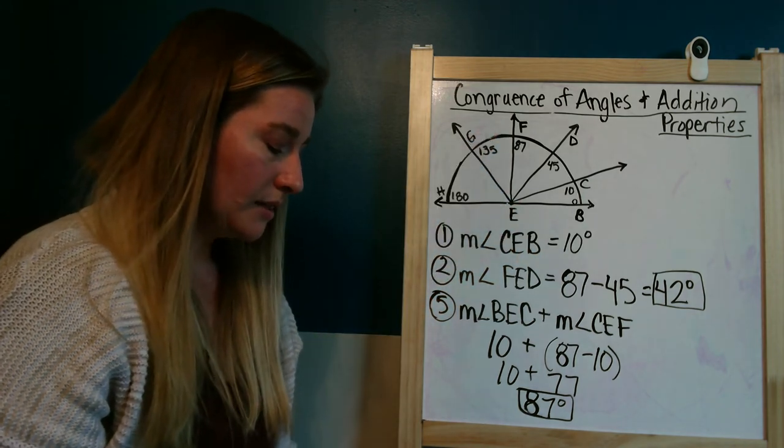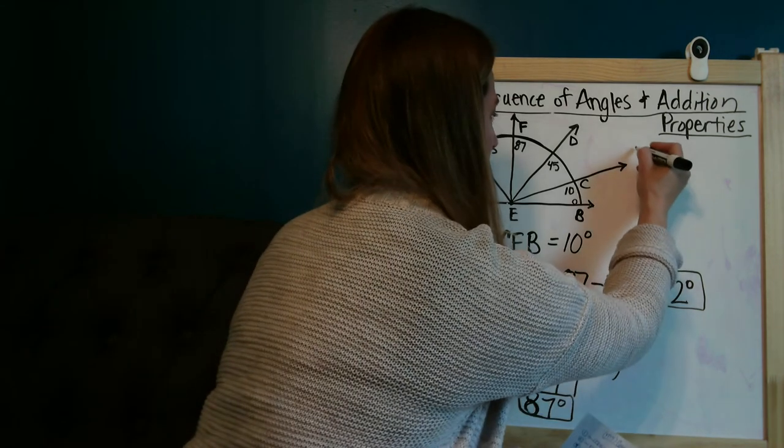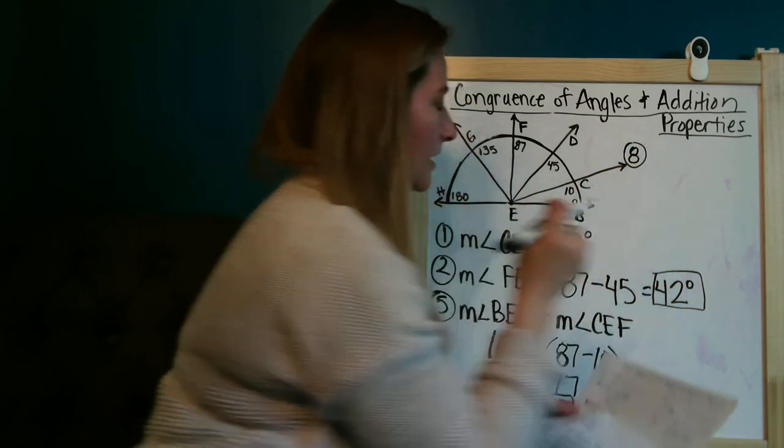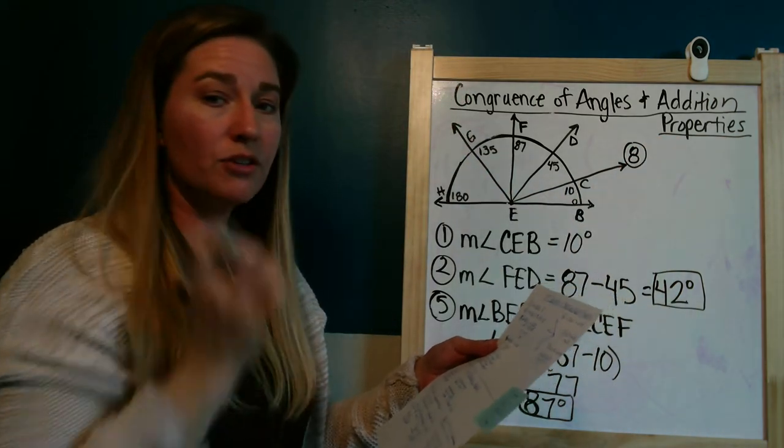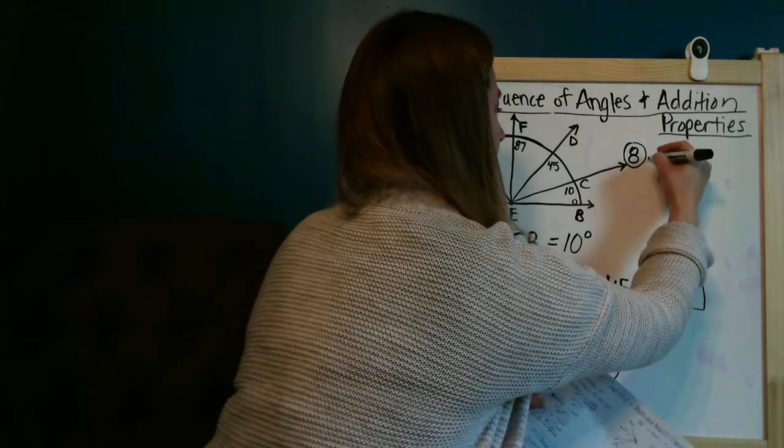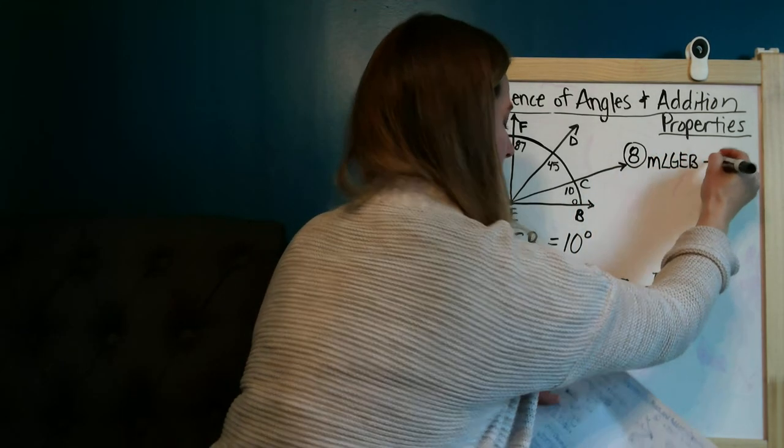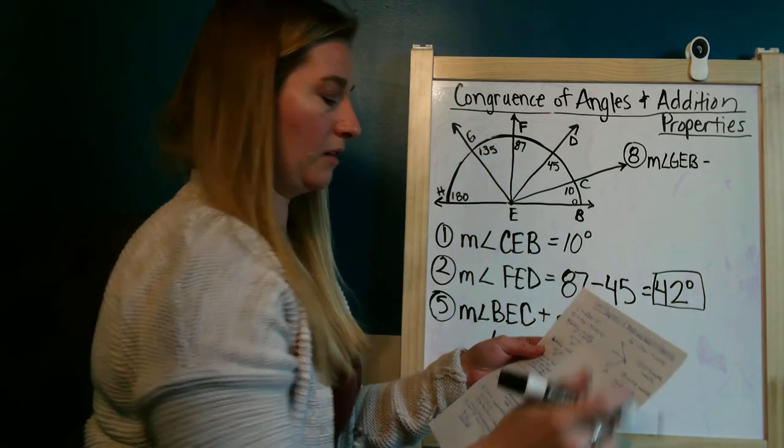Okay, so now let's look at number eight. Number eight asks us to find the measure of angle GEB and we're supposed to take away the measure of angle DEB.